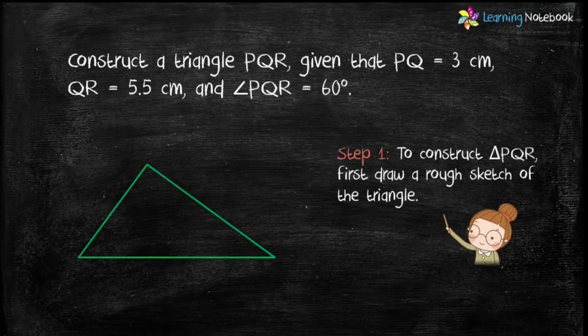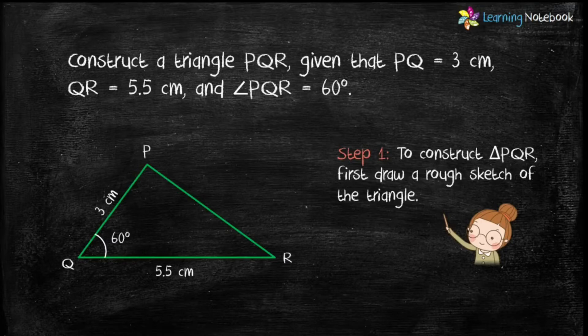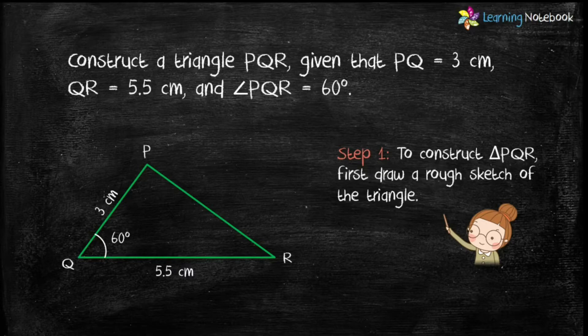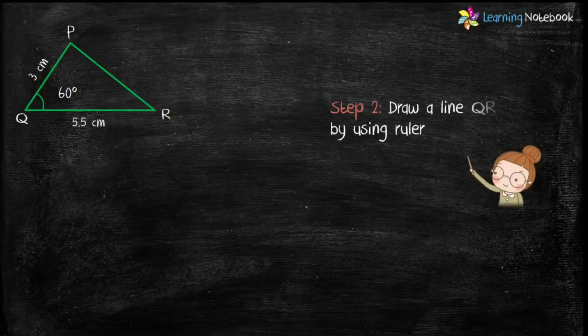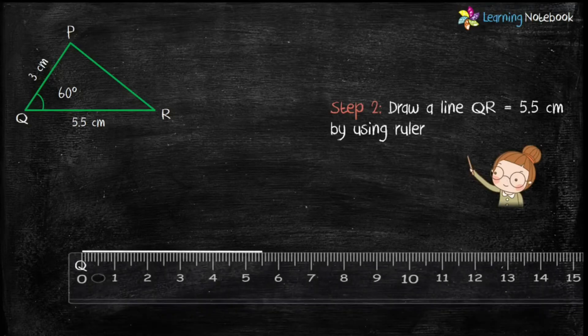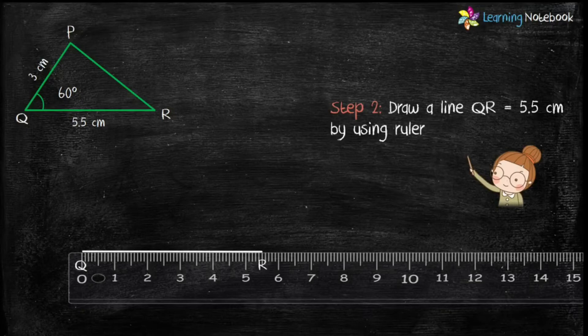In step 1, draw a rough sketch of this triangle so that you have an idea of how to construct this triangle. In step 2, draw a line QR equals to 5.5 cm by using a ruler.